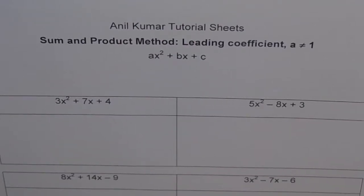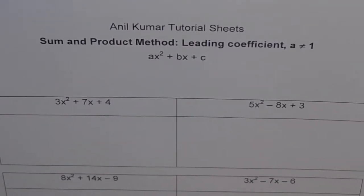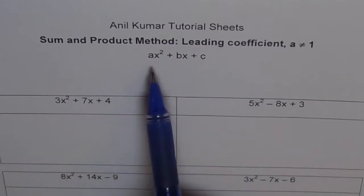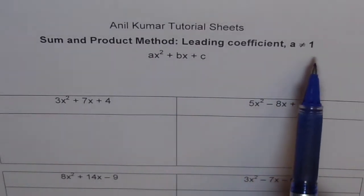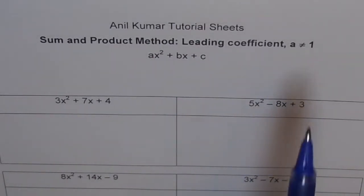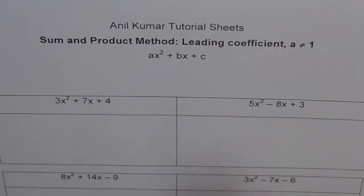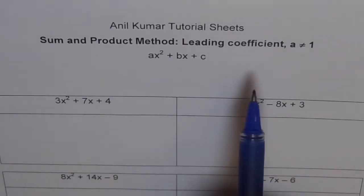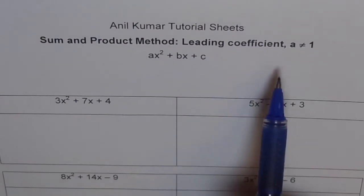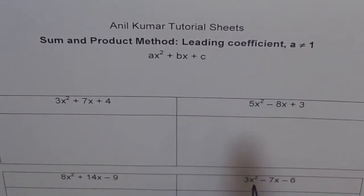Hello, let's continue with factoring of trinomials. Here, the leading coefficient a is not equal to 1. We'll go with sum and product as we discussed earlier with leading coefficient a equals to 1. The procedure is kind of similar.